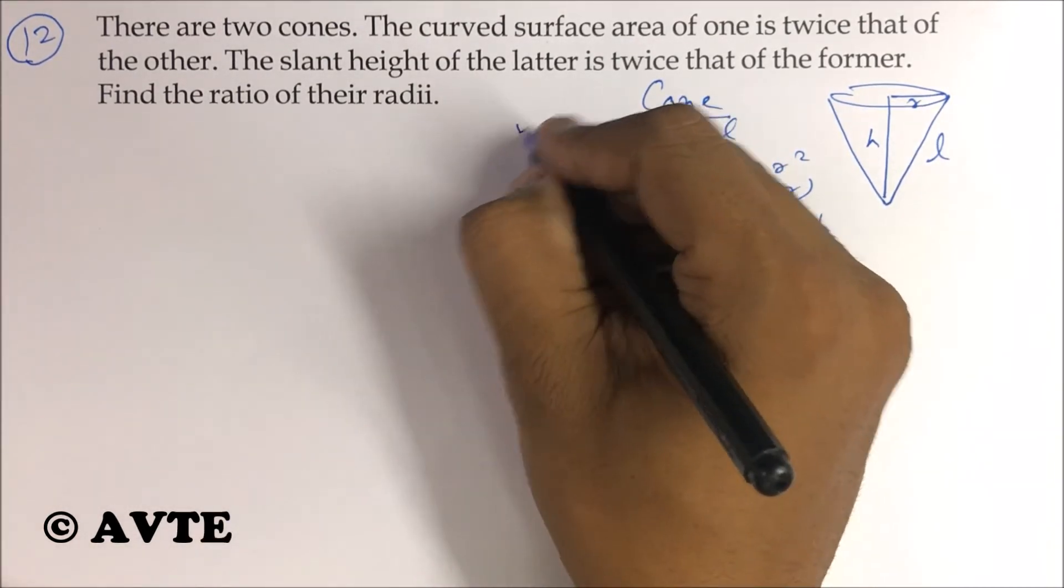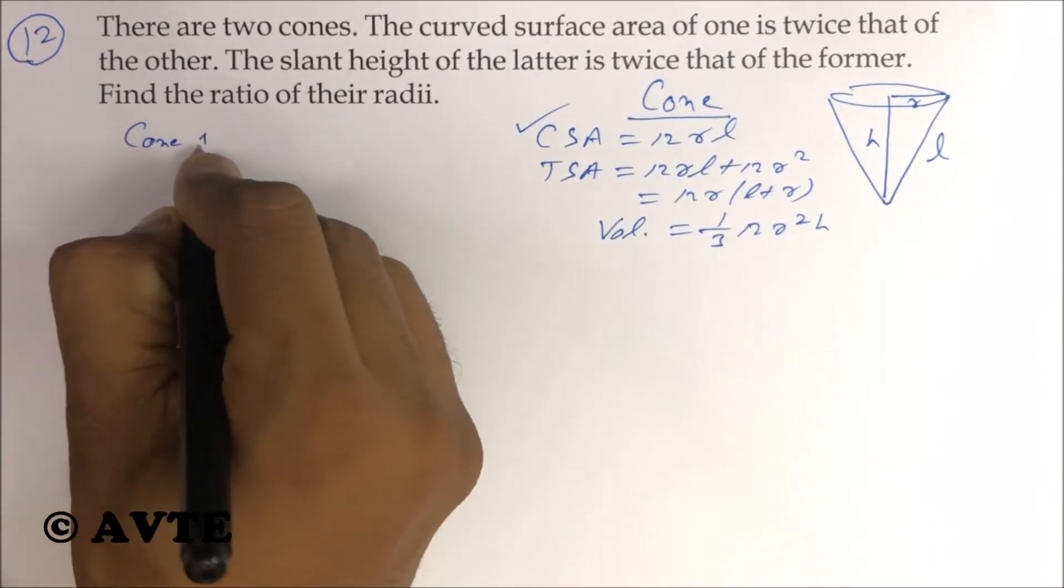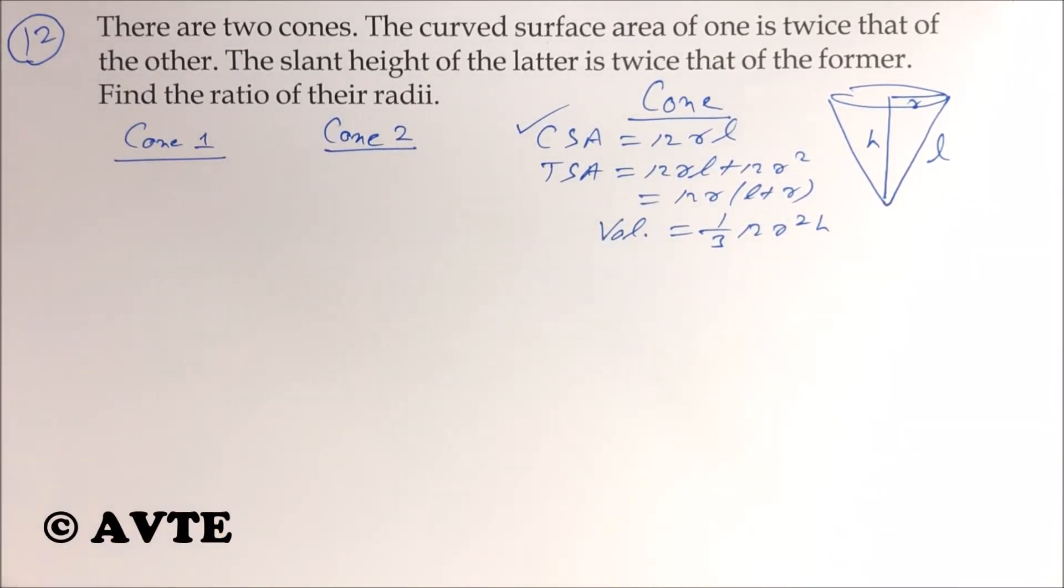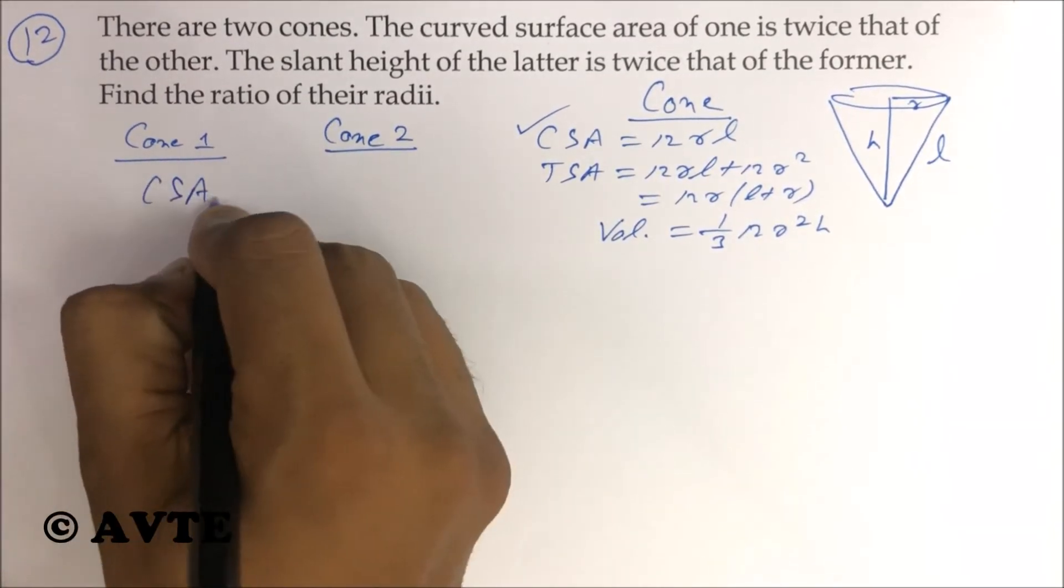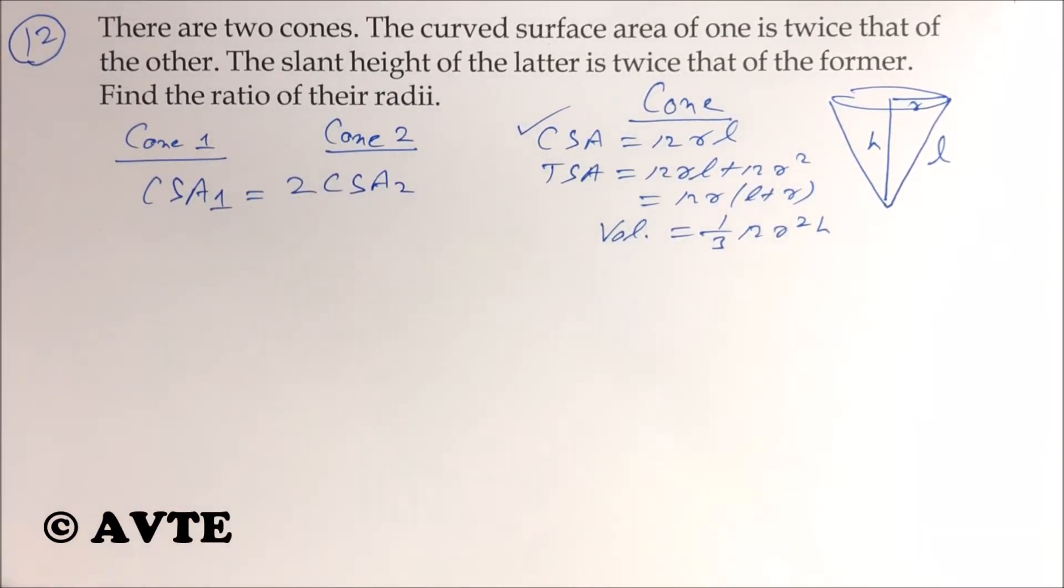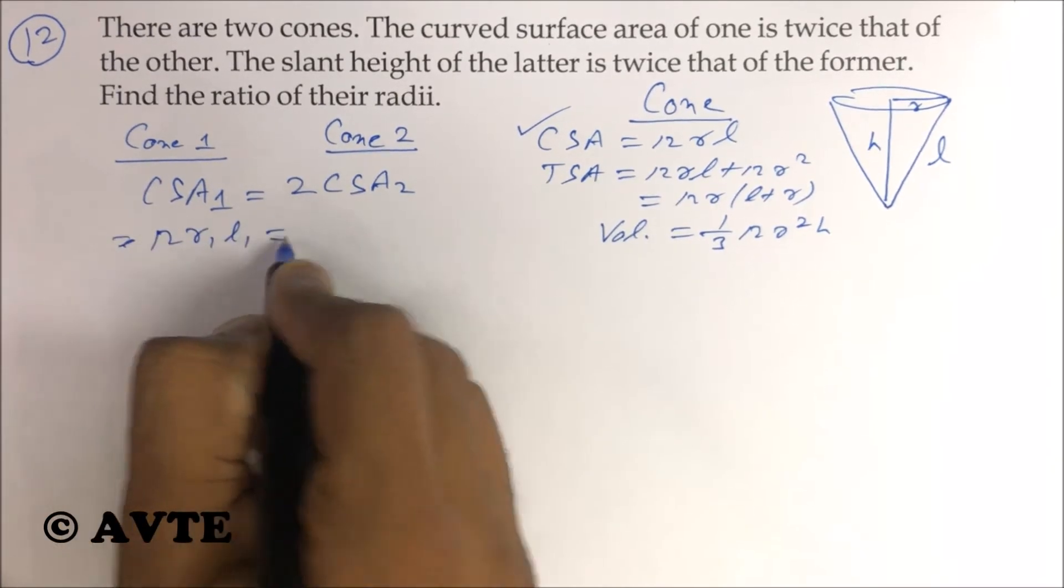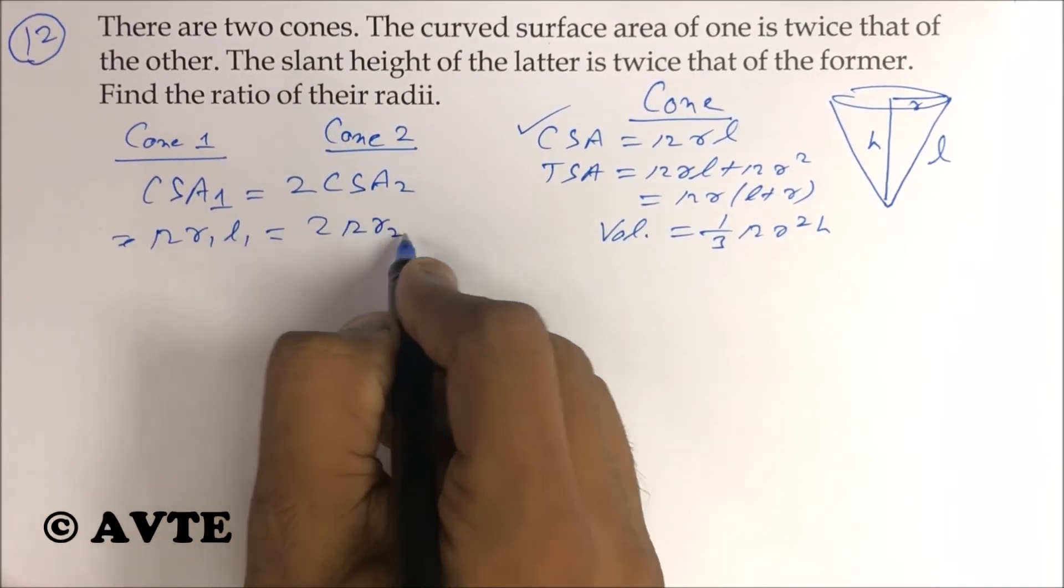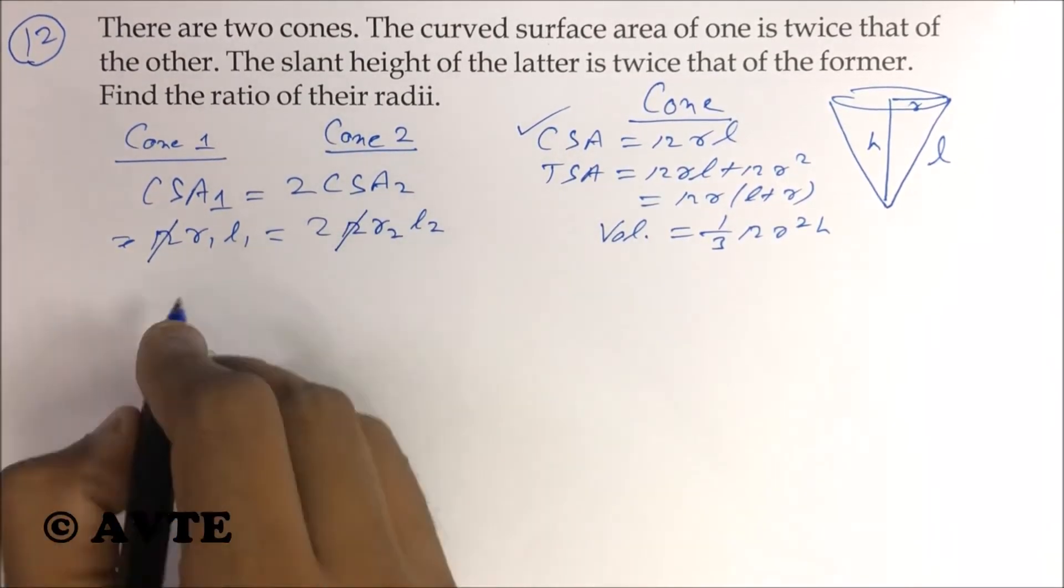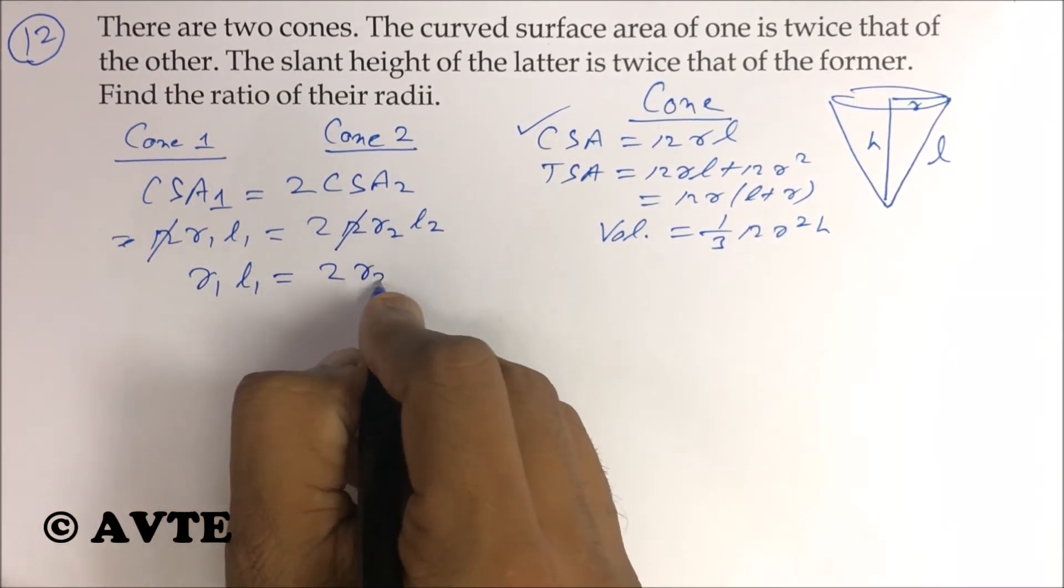In this question we require only this formula. Now we have cone 1 and cone 2. We have CSA of the first cone is twice CSA of the second. It means pi r1 L1 is twice pi r2 L2. Pi cancels, so r1 L1 is twice r2 L2.